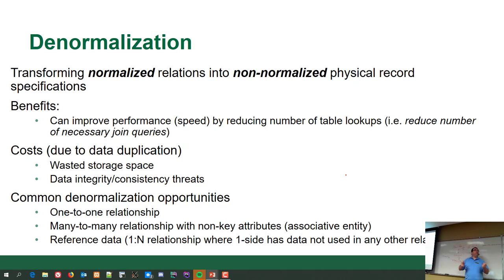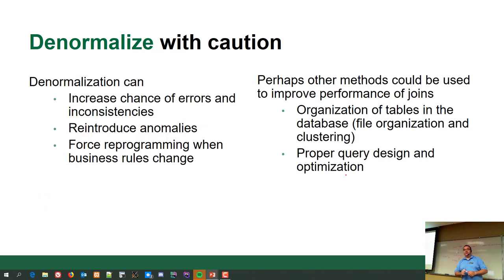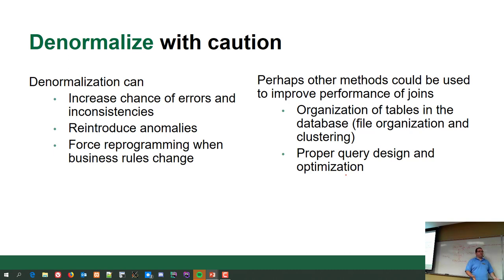Reference tables — countries, states — are also targets for denormalization. When denormalizing, why create extra joins if you don't need to? Countries don't change their names every week. When you denormalize, there are risks: you can increase the chance of errors and inconsistencies, reintroduce anomalies, and if business rules change you may need to reprogram the queries that populate these tables and update the reports to reflect new structures. It's not just 'add this extra column' — if you don't update everything that goes with it, the numbers go wrong.